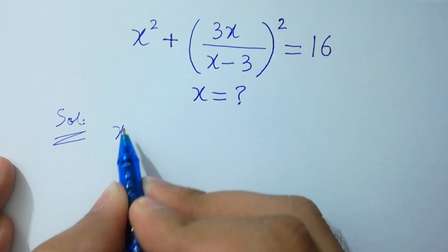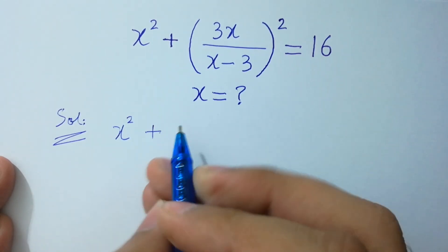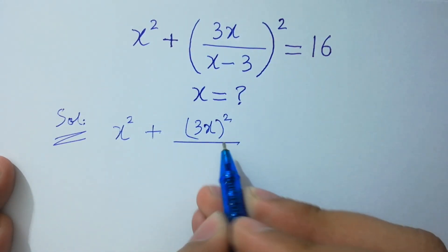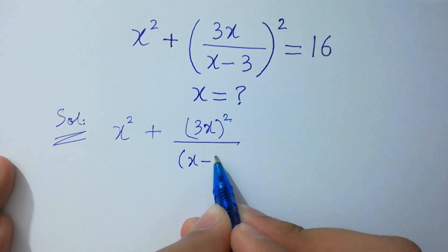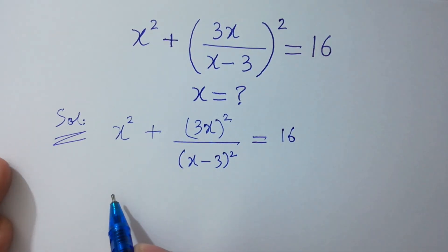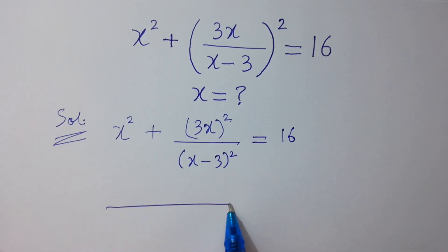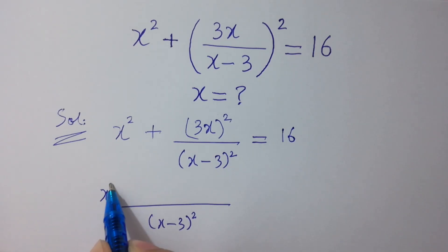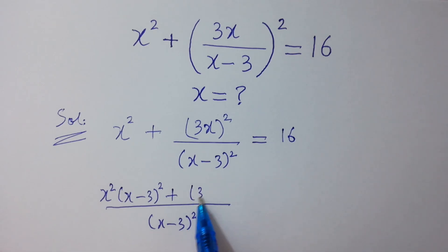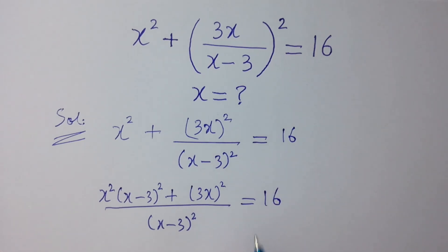It will be equal to (x² + 3x)² over (x-3)² equals 16. Take LCM: (x-3)² times x² plus (3x)² equals 16. I hope you understood.